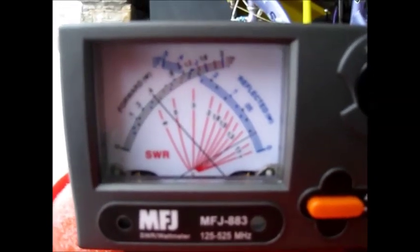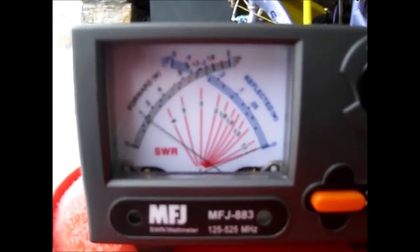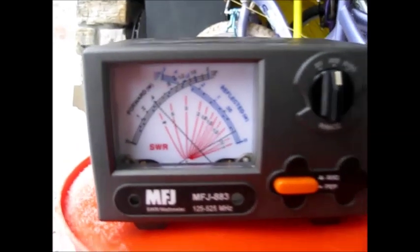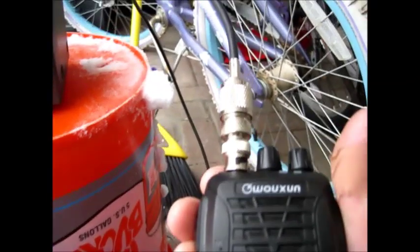That's about 1.3 to 1 with 4 watts forward. That's not bad at all. So you wouldn't see an SWR or performance like that at all on a rubber antenna.